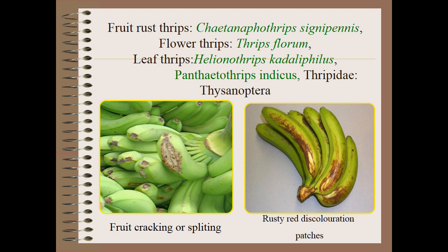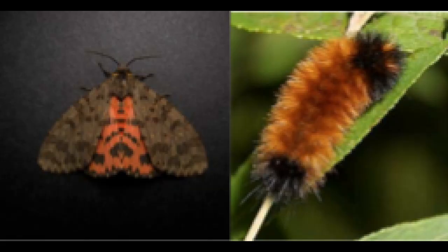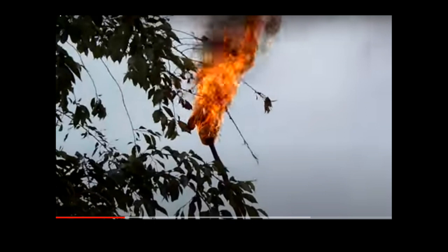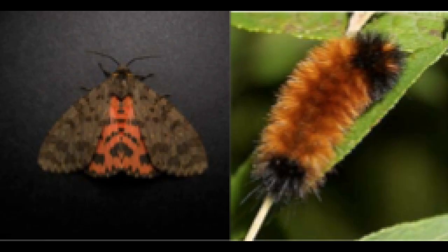Next are leaf feeders. First is the castor hairy caterpillar, Pericallia ricini, family Arctiidae, order Lepidoptera. Larvae are black with brown heads having long brown hairs. Adults are grey colored with dark spots on the pinkish hind wings. For management, collect and destroy egg masses and caterpillars. Use a burning torch to kill congregated larvae. Use light traps to attract and kill adults. Spray chlorpyrifos or quinalphos.